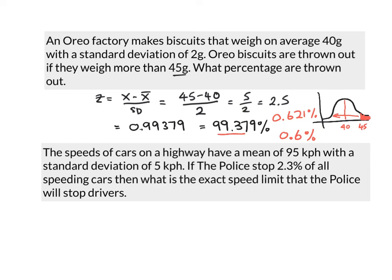Last question here. Speed of cars on a highway, mean of 95 and deviation of 5. The police stopped 2.3% of all speeding cars. What is the exact speed limit the police will use? It's the 2.3% we're interested in. If we look at the graph, this is the mean here at 95. The police, these are the ones that break the speed limit, is 2.3%. And if we do some subtraction here, this percentage here is going to be 100 minus that, so 97.7%. 97.7% to the left of the value, the speed we're looking for.